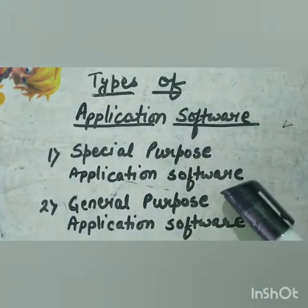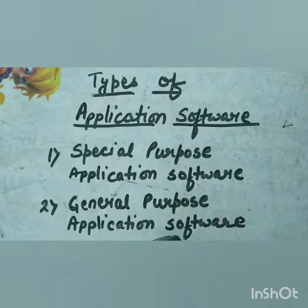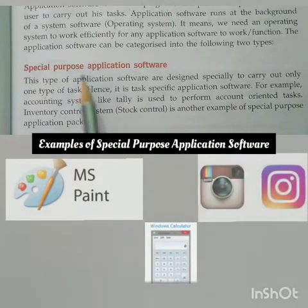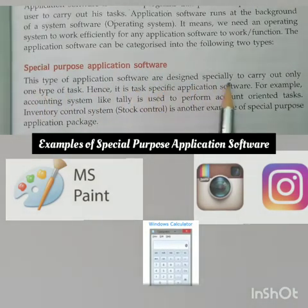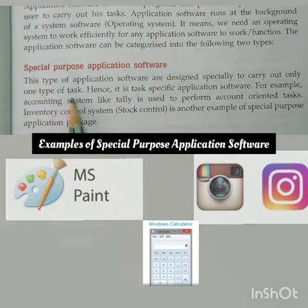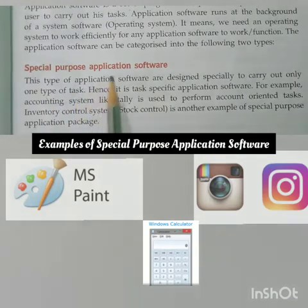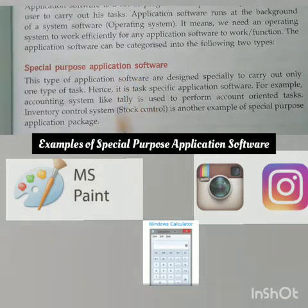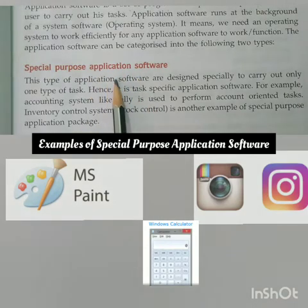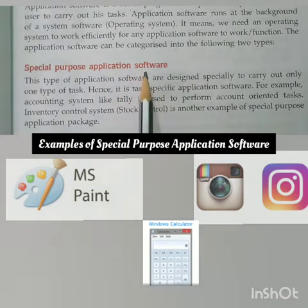Let's read about special purpose application software. This type of application software is designed specially to carry out only one type of task. It is a type of software which is created to execute one specific task. For example, a camera application on your phone — it will only allow you to take and share pictures and videos.